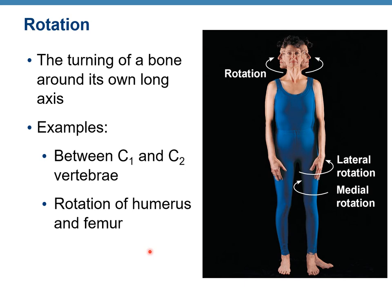Rotation is the turning of a bone around its own long axis. Examples include the joint between C1 and C2, or rotation of the humerus and femur. You can rotate your head, and it can be lateral rotation or medial rotation. You can also rotate your arm or your leg — the femur or humerus.